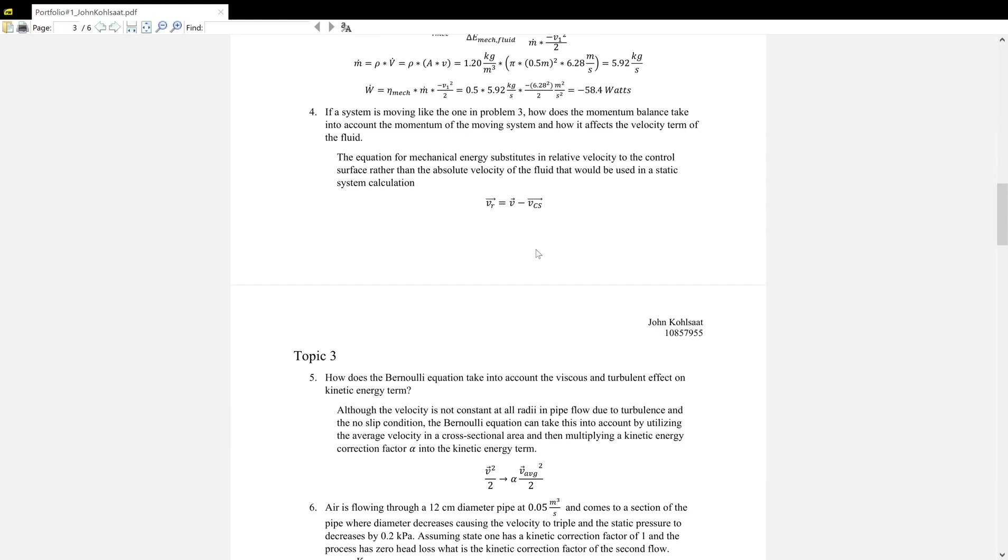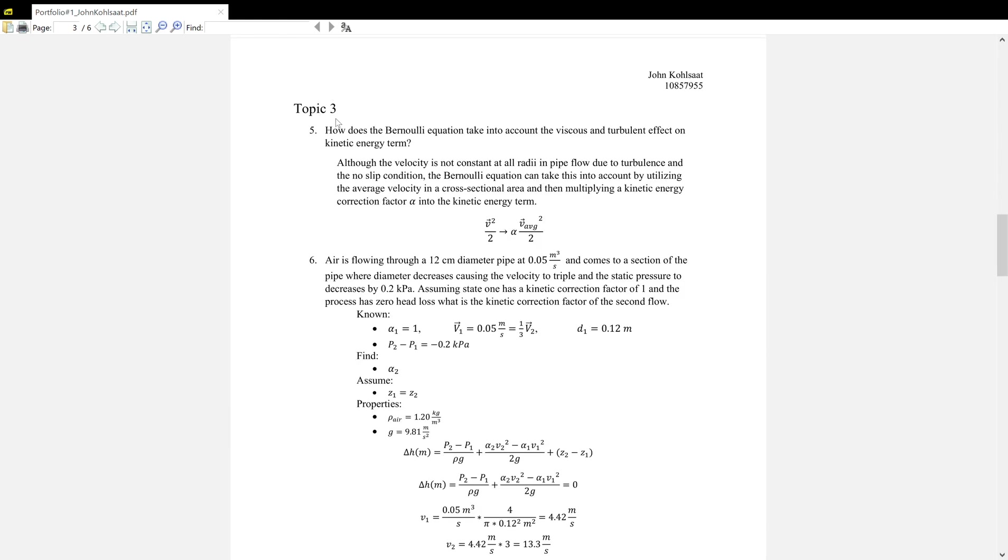And so for topic number three, the first question is: how does the Bernoulli equation take into account the viscous and turbulent effect on the kinetic energy term? We essentially transform it. Since the velocity is in an envelope or is changing due to the no-slip condition and turbulence, the velocity in the center is faster than the velocity near the edge of the pipe. But in order to take into account for this, we do utilize the velocity average. And in order to take into account the viscous and turbulent forces, we multiply it by a kinetic correction factor of alpha.